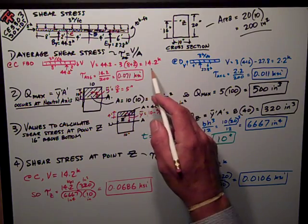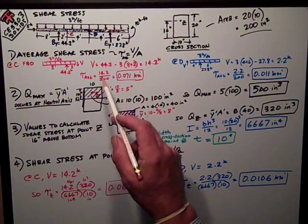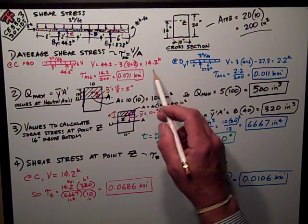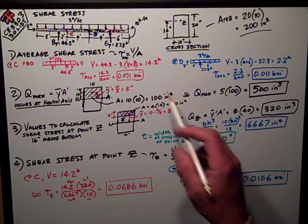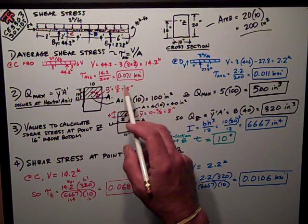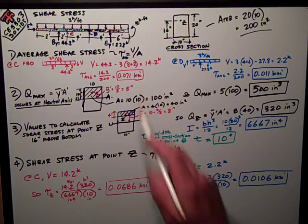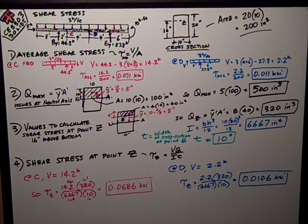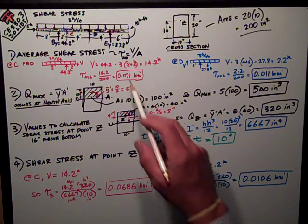I think most people got that, although not all. So the area of that cross-section is 20 by 10, 200 square inches. So the shear stress there is 0.071 ksi. I think we gave you the answers in psi, but you can do that conversion.